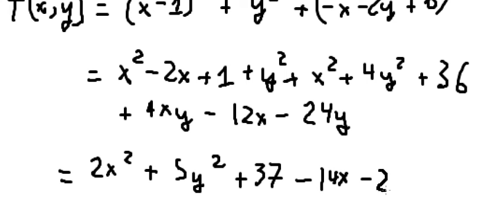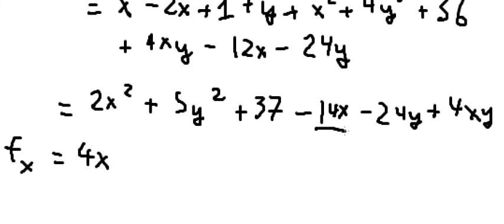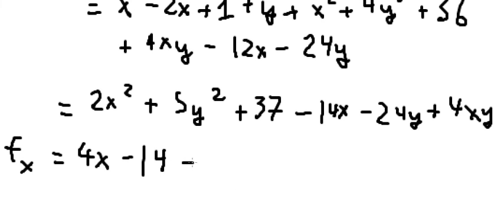Next, we take the partial derivative of f with respect to x. The term 2x² gives 4x; the 4xy term gives 4y; the constant −14x gives −14; all other terms without x give 0. So ∂f/∂x = 4x + 4y − 14.